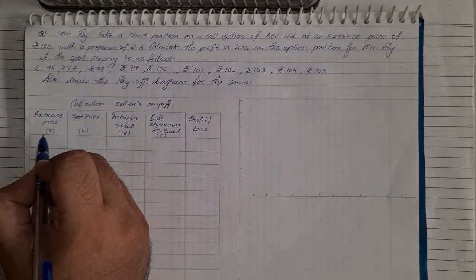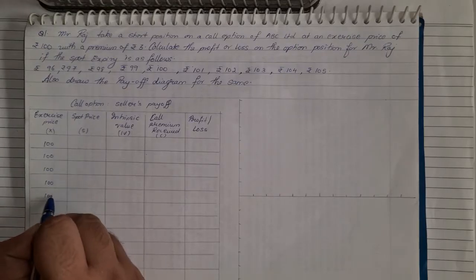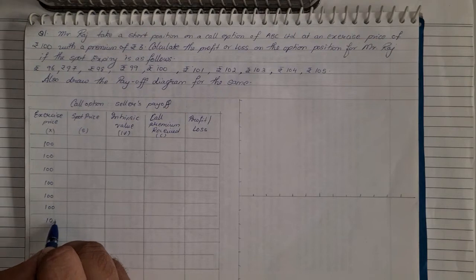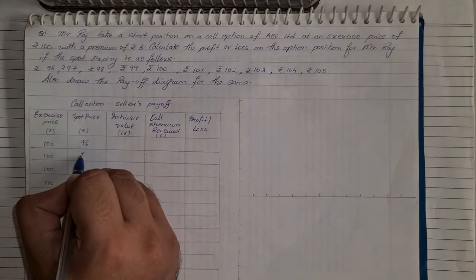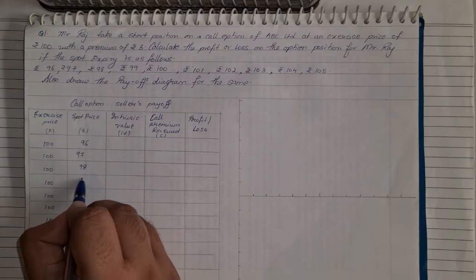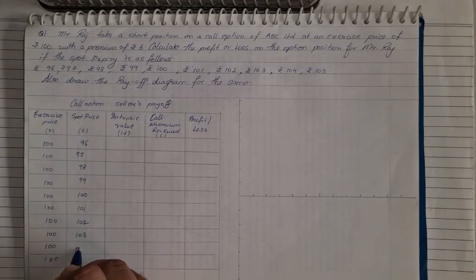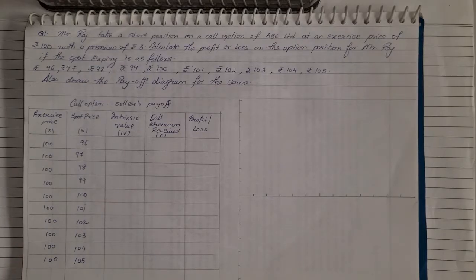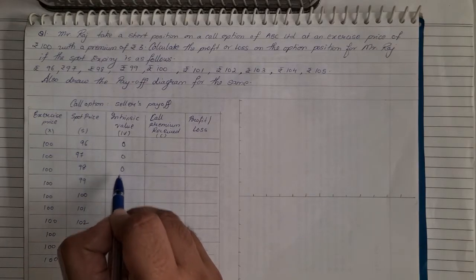As per the question, the exercise price is 100 for all ten options of spot price. Now under call option, the intrinsic value up to the point where the exercise price and spot price are the same will remain zero — so from spot 96 through spot 100, the intrinsic value for all will remain zero.